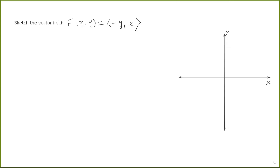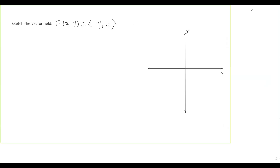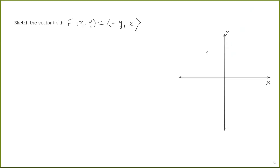In this video I just want to give an example of how you can sketch a vector field. The vector field we have here is f(x,y) = (-y, x). This means that at every point (x,y) in the xy-plane, we draw the vector (-y, x). I'm going to do this by looking at a few easy sample points to help give us an idea of what the vector field is going to look like.